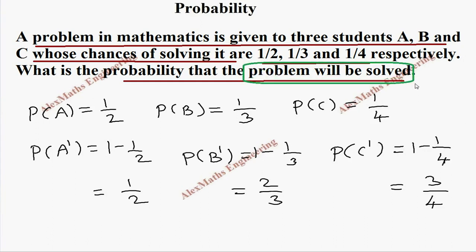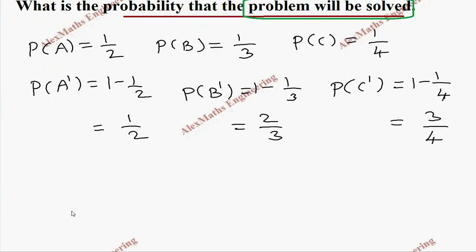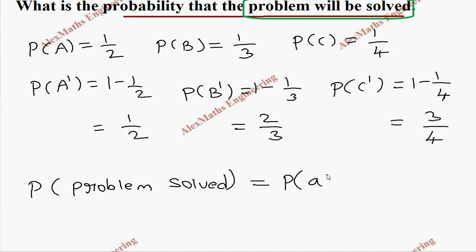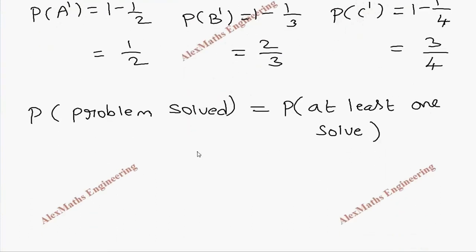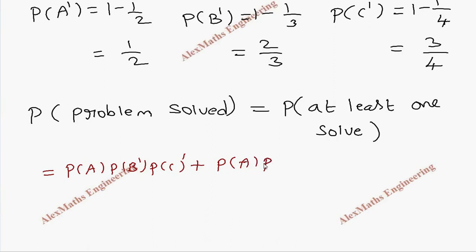Now the problem will be solved means if any one solves the problem, or any two solve the problem, or all three solve the problem — that is P of at least one solved. But we get so many cases: one solving, then two solving, or all three solving. Suppose if we try to write exactly one solving: it is P(A) with B and C not solving, and this will come in a cyclic order — P(A) into P(B') into P(C').